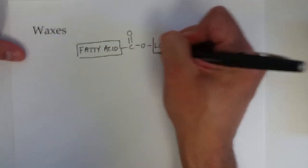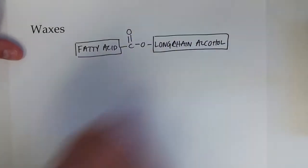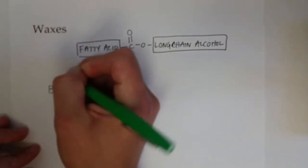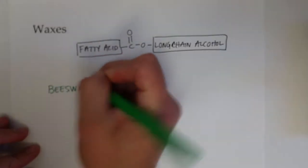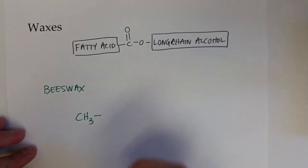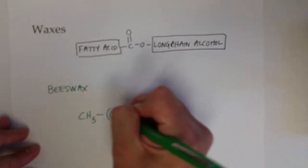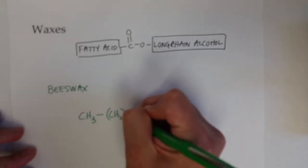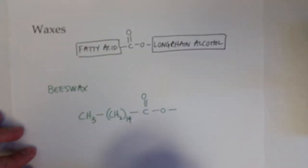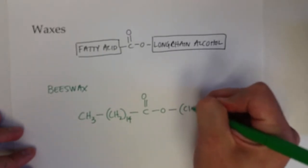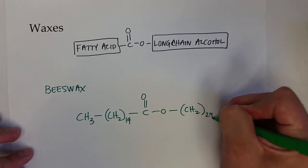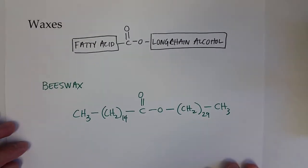A fatty acid links up with a long-chain alcohol to form waxes. A really common wax that you've probably come across is beeswax, which has a CH3 group on the end of the fatty acid, 14 CH2 alkyl chain in the middle bonded to an ester group, and then the long-chain alcohol actually has 29 CH2 alkyl groups and then ending with a terminal CH3.